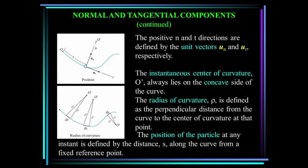We define the positive n and t directions by unit vectors u-t and u-n. The instantaneous center of curvature, o-prime, always lies on the concave side of the curve, and the radius of curvature, denoted by rho, is defined as the perpendicular distance from the curve to the center of curvature at that point. The position of the particle at any instant is defined by the distance s along the curve from some fixed reference point.